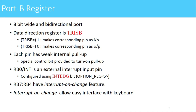The next port is port B, which is an 8-bit wide bidirectional IO port. The data direction register is TRISB, used for setting the direction of individual pins of port B — 1 makes a pin an input and 0 makes it an output. Each pin has a weak internal pull-up, and a special control bit is provided to turn these pull-up resistors on or off. RB0/INT is an external interrupt pin available on port B; the LSB pin RB0 is multiplexed with the external interrupt pin INT, and this can be configured with the INTEDG bit in the option register.